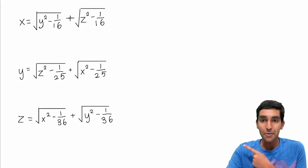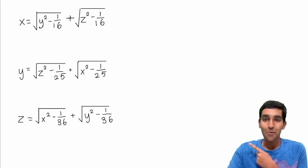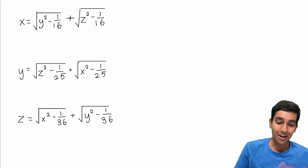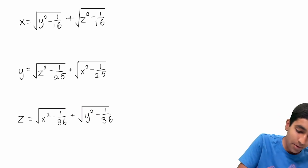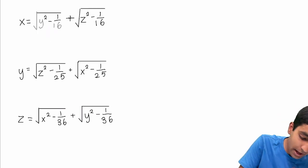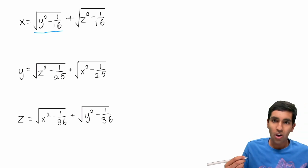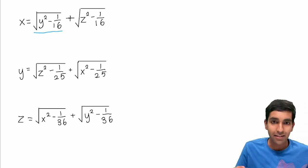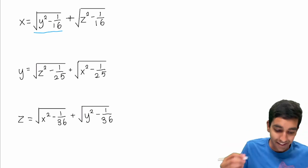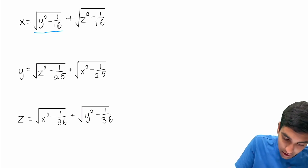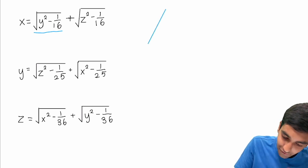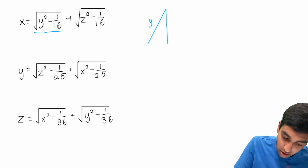This is a geometry problem — let's explore how. We have the square root of y squared minus 1 over 16. What does that remind us of? The Pythagorean theorem. So let's imagine a right triangle with a hypotenuse of length y and an altitude of length 1 over 4.